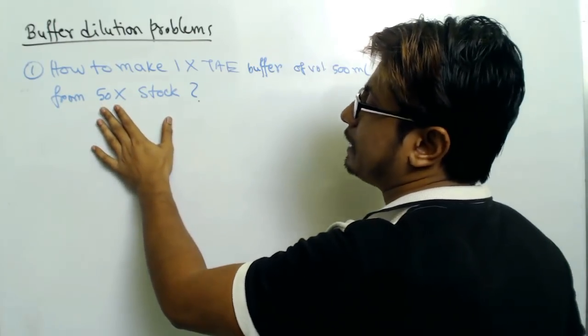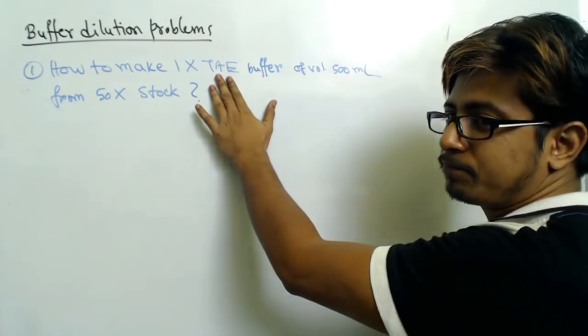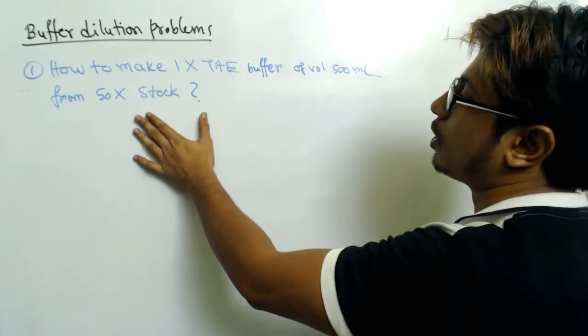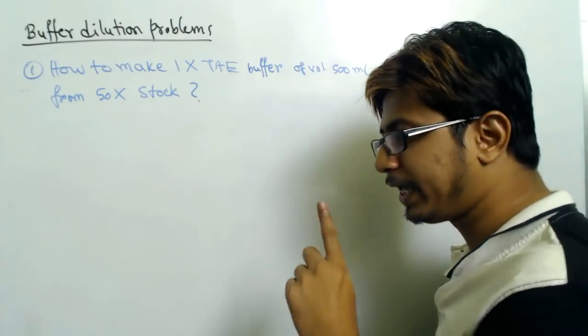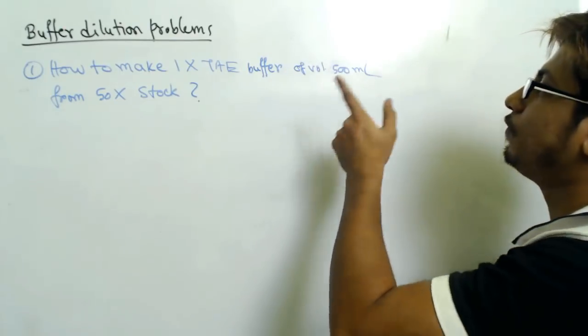So let's say the stock buffer is 50X strong. We need to make it 1X. How to convert 50X stock into 1X of volume 500 milliliters? The question is: how to make 1X TAE buffer of volume 500 milliliters from 50X stock buffer solution.